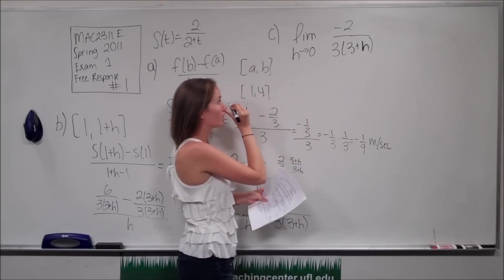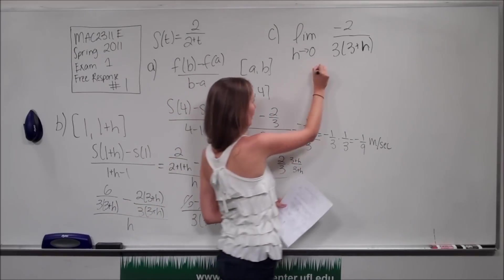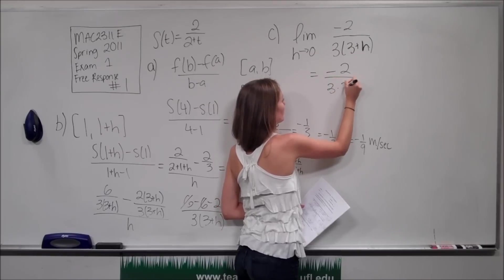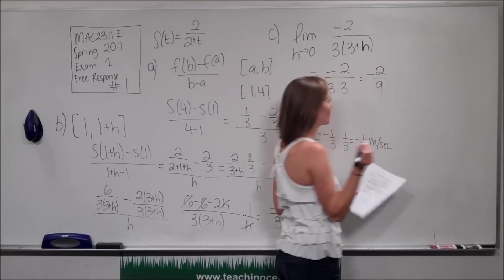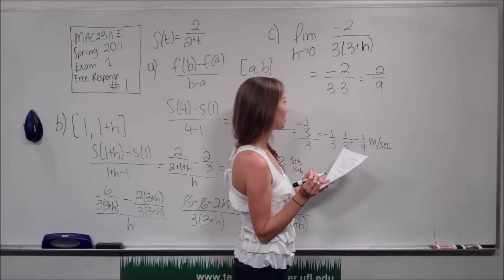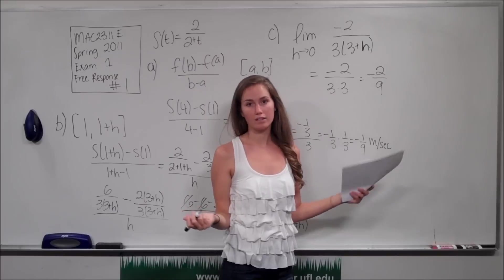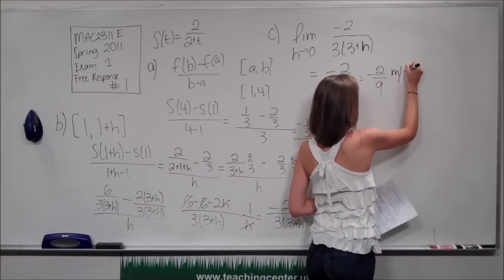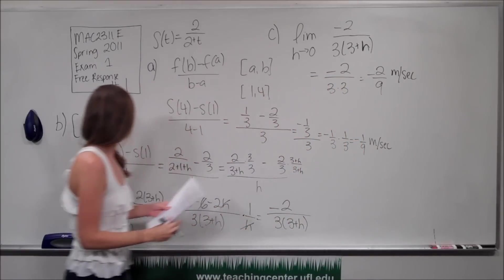Taking the limit as h approaches 0, we can just plug h equals 0 in, and we get negative 2 over 3 times 3, which is just negative 2 over 9. That's our instantaneous velocity. We need to remember to include units — just like before, our units are meters per second because it's a rate. So the final answer for number 1 is negative 2 over 9 meters per second.